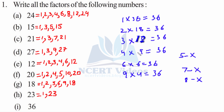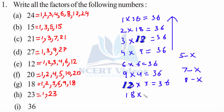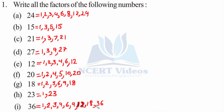Once we are at the middle term, we just reverse the pattern to get the remaining factors. Therefore, 12 into 3 gives you 36, 18 into 2 is 36 — we are just reversing it. 36 times 1 gives you 36. This is question number one. This is how we find the factors of any number. Remember, 1 is always a factor of any number.